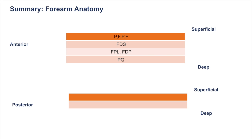Looking at the posterior portion of the forearm, from superficial to deep: the most superficial layer has brachioradialis, extensor carpi radialis longus, extensor carpi radialis brevis, extensor digitorum, extensor digiti minimi, and extensor carpi ulnaris. In the deeper layer beneath those are the supinator, abductor pollicis longus, extensor pollicis brevis, extensor pollicis longus, and finally the extensor indicis.